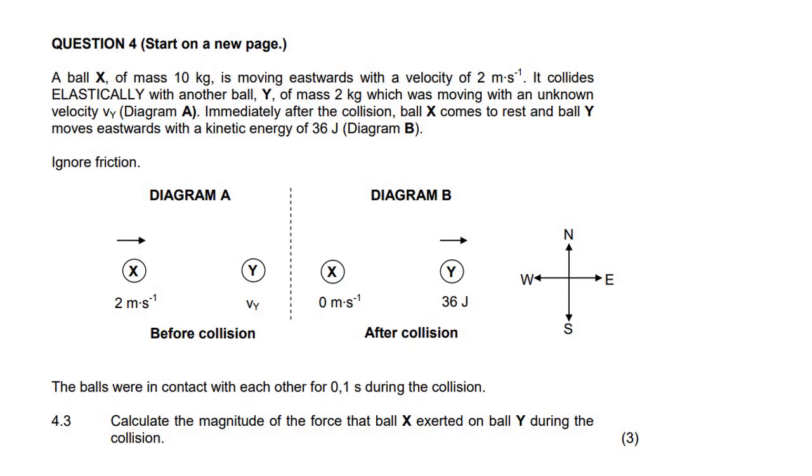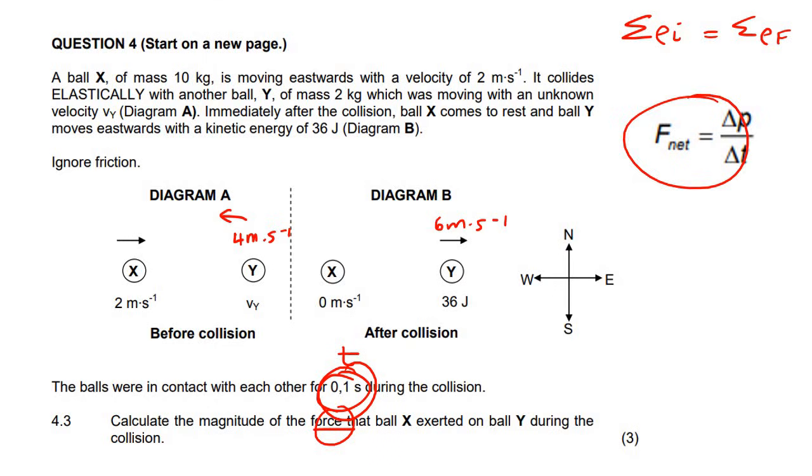Question 4.3 says the balls were in contact for 0.1 second. So that's a time and force. Whenever they have two objects and start talking about time and force, we want to use this formula - Fnet equals delta P over delta t. This formula is on your formula sheet. It talks about momentum, the net force, and time.